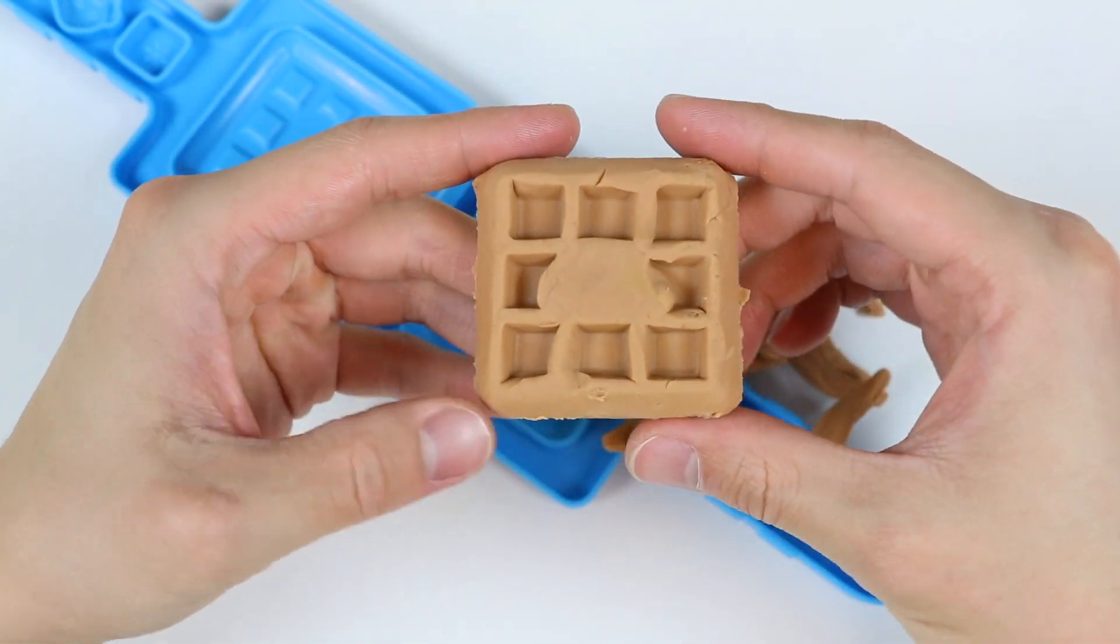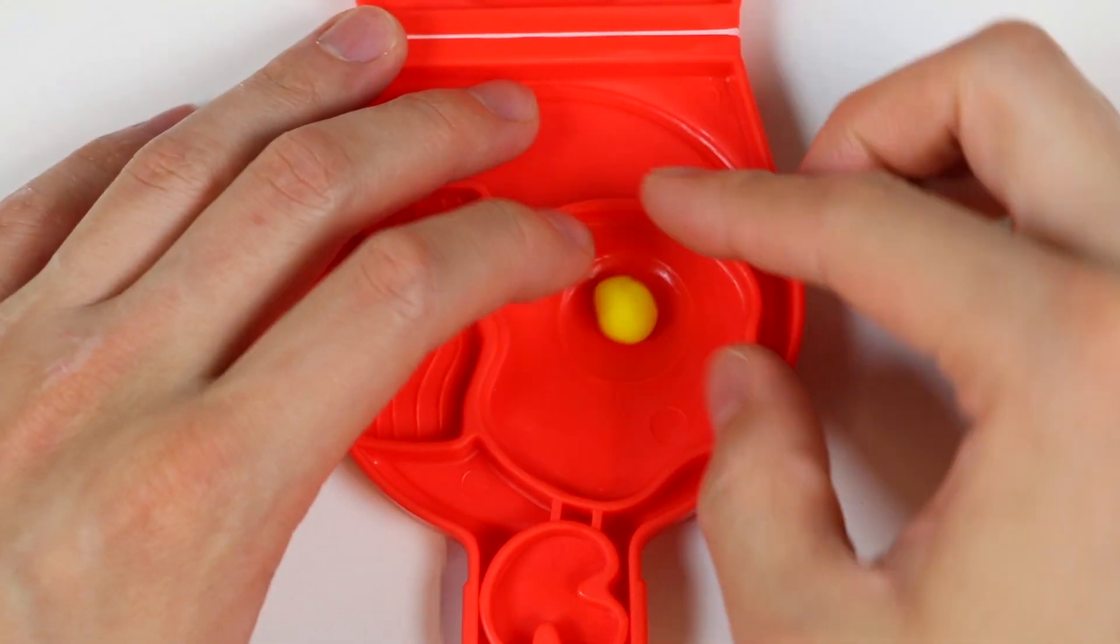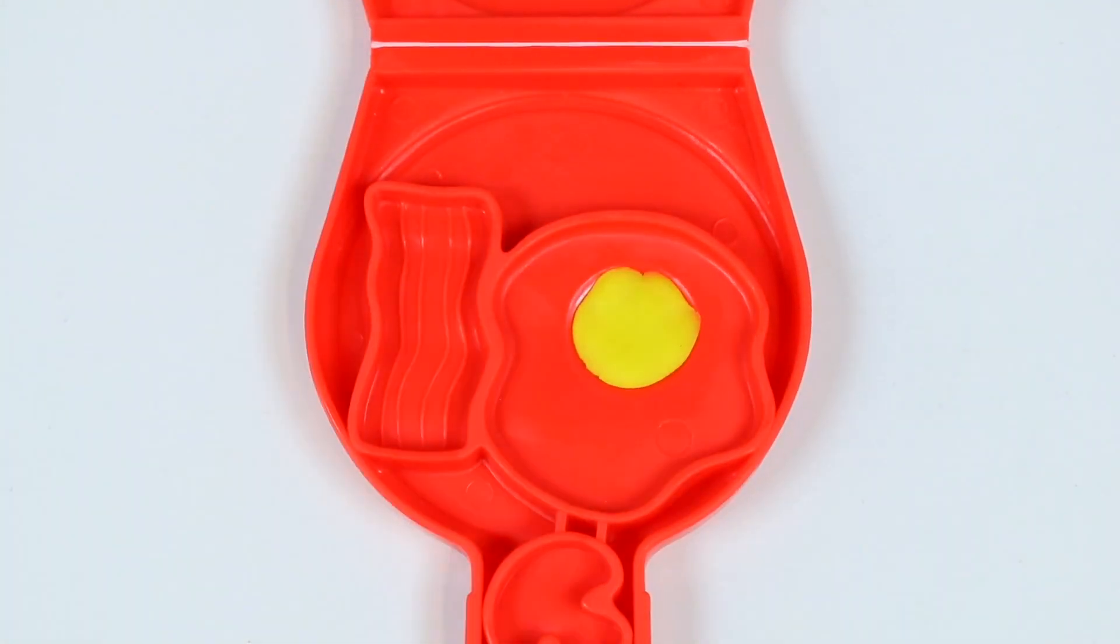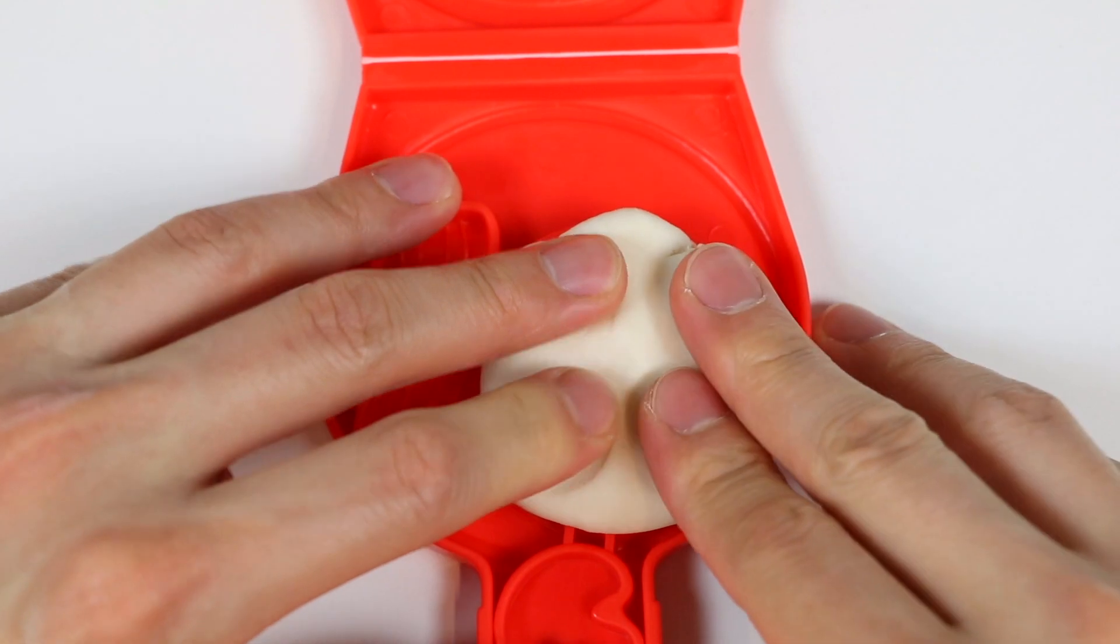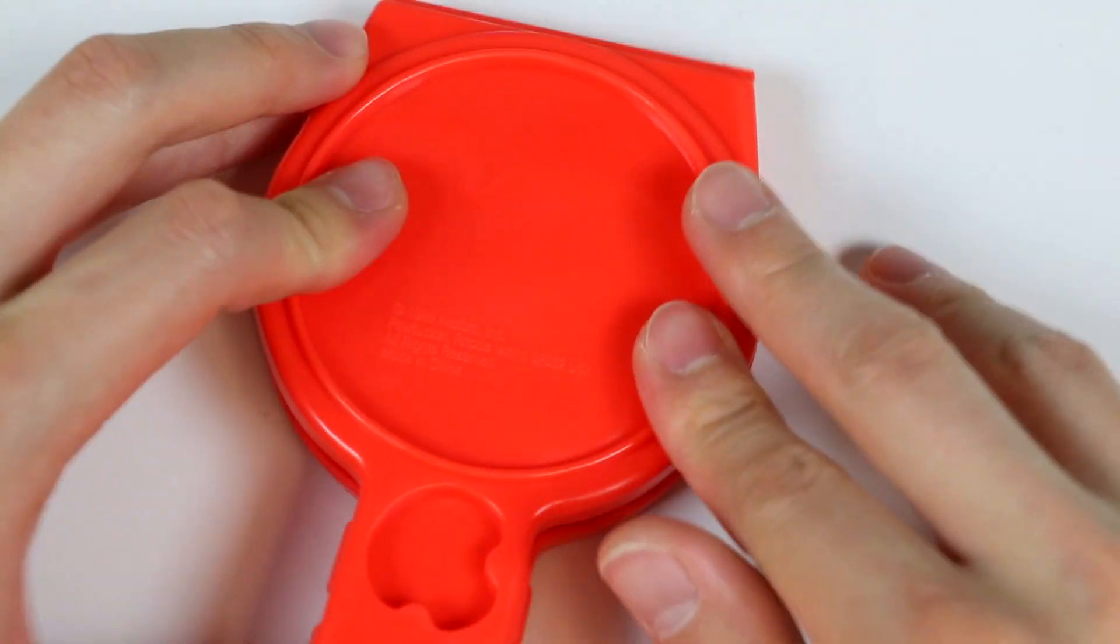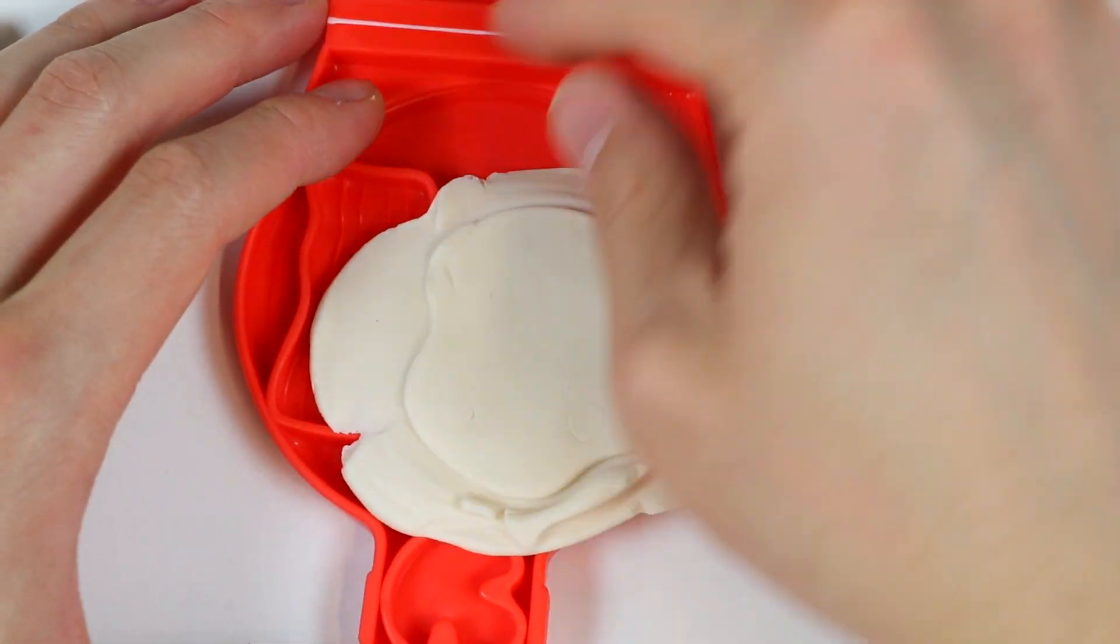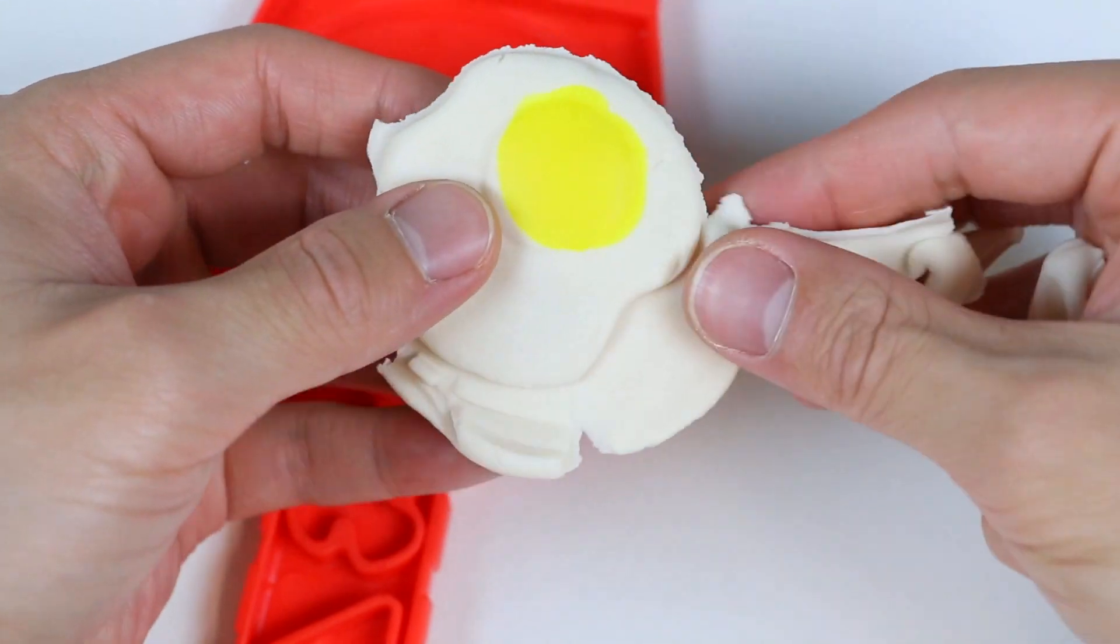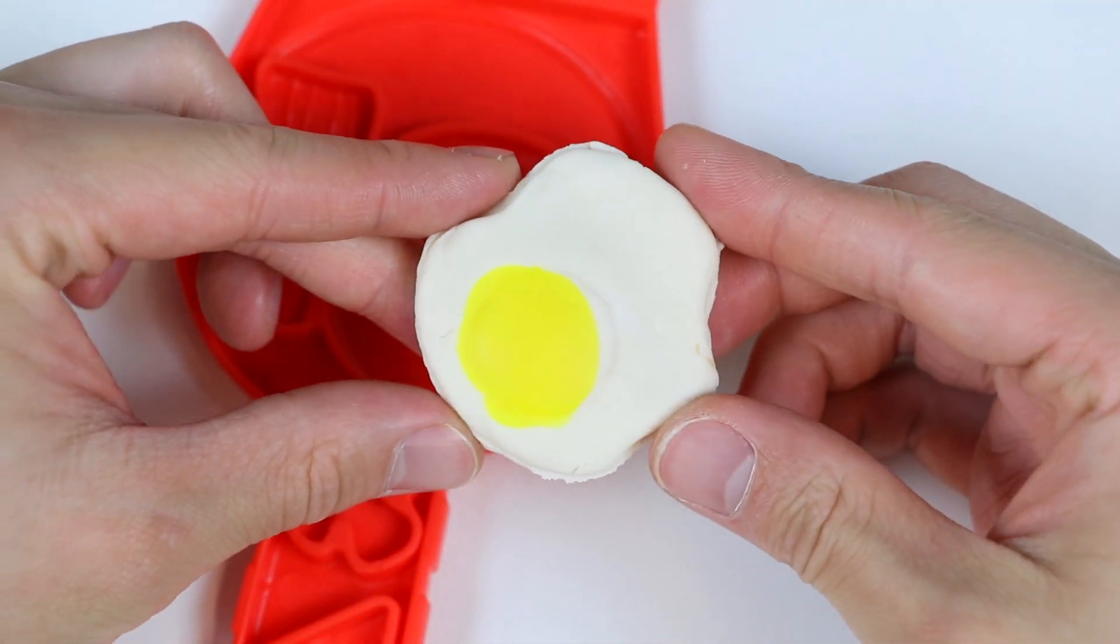And now let's make some more breakfast foods to go along with this waffle. Start by making an egg. Here's the yolk and now the egg white. One sunny side up, coming right up. Here's a delicious egg to go with the waffle.